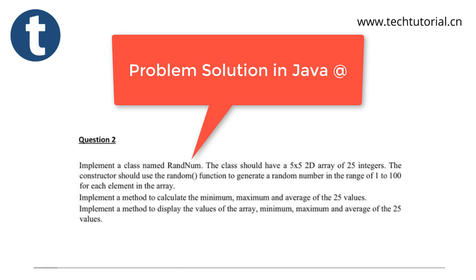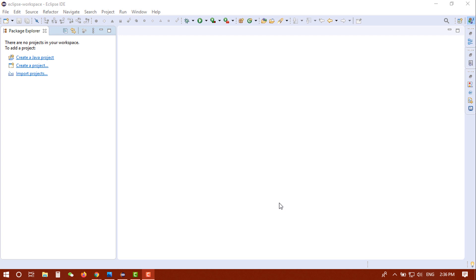The range is fixed — the maximum is 100, not more than 100, and the random number will be generated within this range. Also, implement a method to calculate the minimum, maximum, and average of the 25 values, and implement a method to display the values of the array along with the minimum, maximum, and average. Let's open Eclipse IDE and create a new Java project.